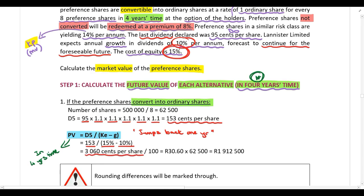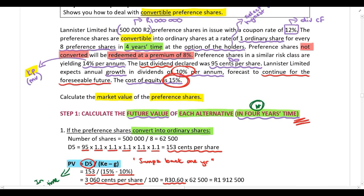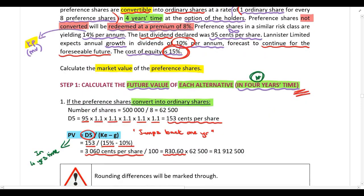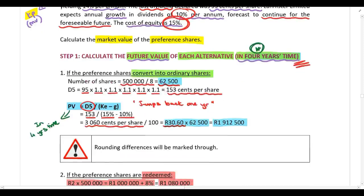Using Gordon's Dividend Growth Model with d5, the cost of equity at 15%, and growth at 10% in perpetuity, we can calculate what those shares will be worth in four years' time. Using d5 in the calculation gives us the value in four years' time — the shares will be worth 30 rand and 60 cents in four years' time. The preference shares convert at one ordinary share for every eight preferences held, and with 500,000 preference shares in issue, they convert into 62,500 ordinary shares.